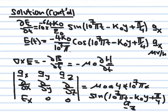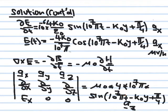The negative-negative from the minus sign and the derivative makes this term positive. Differentiating 10^7 π t with respect to t gives 10^7 π, so the right-hand side becomes 4 × 10^7 π μ_naught × sine(10^7 π t minus k_naught y plus π/4).